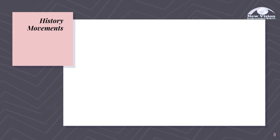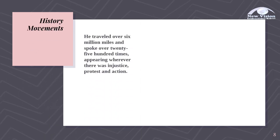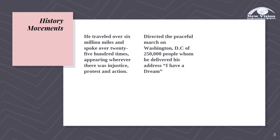These are his history movements. He traveled over 6 million miles. And because he was a famous orator, he spoke over 2,500 times, appearing wherever there was injustice, protests, and action. He also directed the peaceful march on Washington, D.C. of 250,000 people, to whom he delivered his address, 'I Have a Dream.'